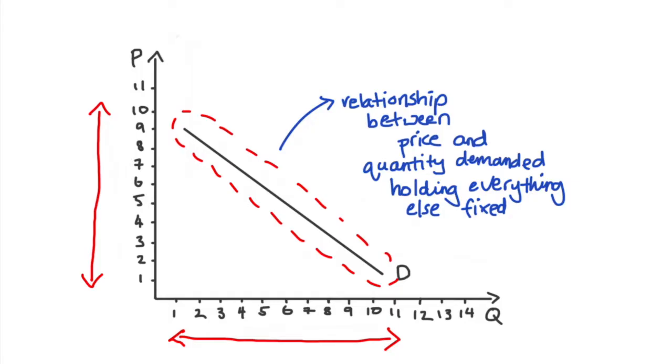So it follows from this that when we're moving along the curve, what we're doing is tracking changes in quantity demanded that are due to changes in the price only.